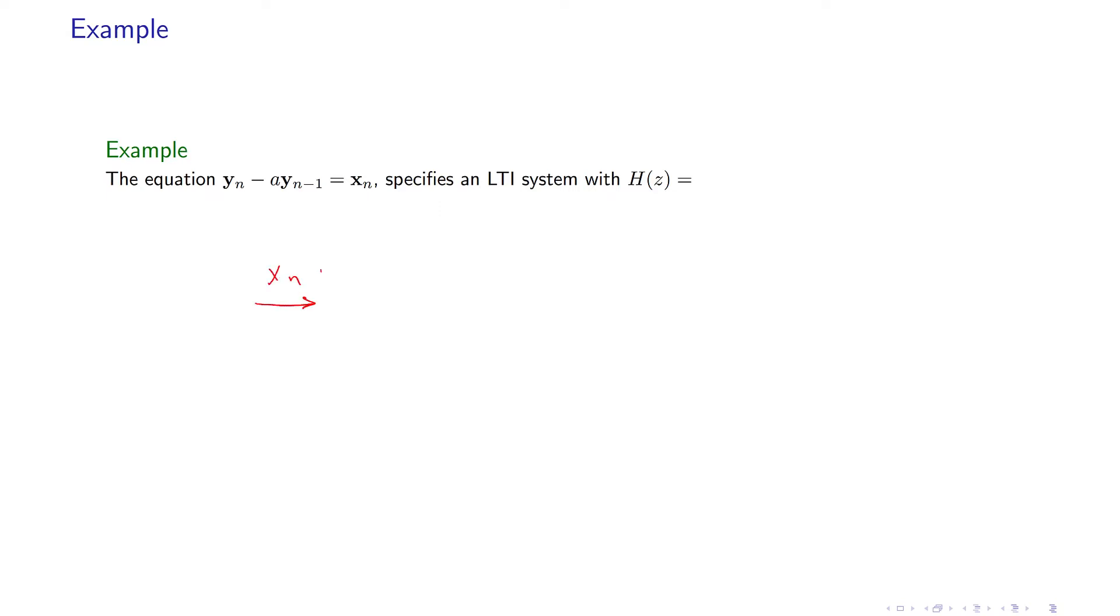So x of n is the input, you have an LTI filter, the output is y of n, and y of n is generated by adding x of n plus a times a previous sample of the output.